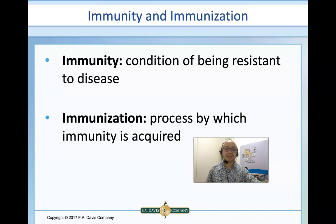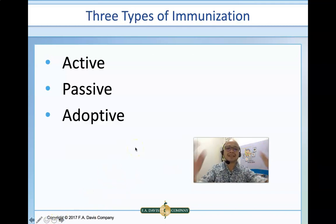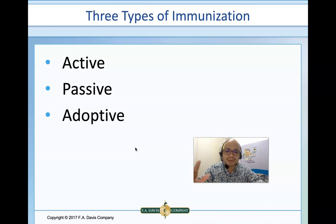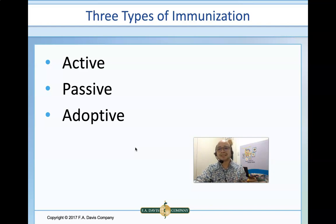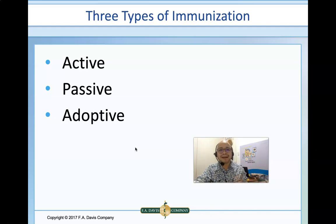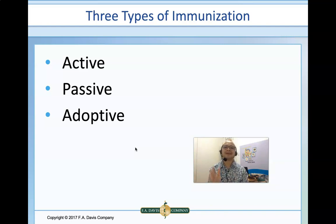Immunization is the process by which immunity is acquired. There are actually three types of immunization: active, passive, and adoptive. When you say active, the keyword is an active immune response — it is your own immune system that plays an important role in the production of antibodies; you yourself produce the antibodies. Whereas in passive immunity, antibodies are just given to you. Active immunity is much longer-lasting compared to passive, however active immunity does not have a therapeutic effect, unlike passive immunity which is both therapeutic and prophylactic.